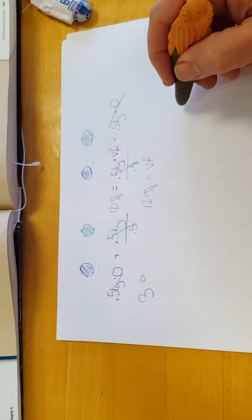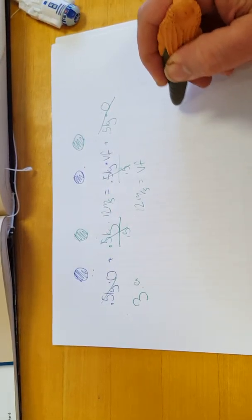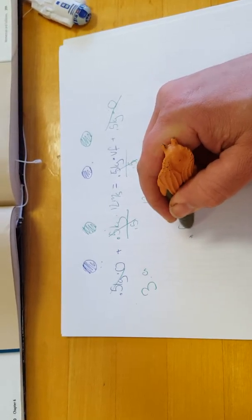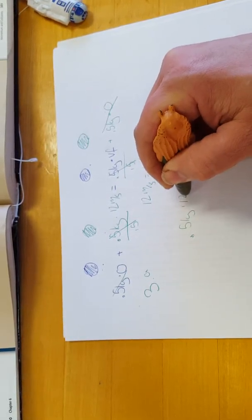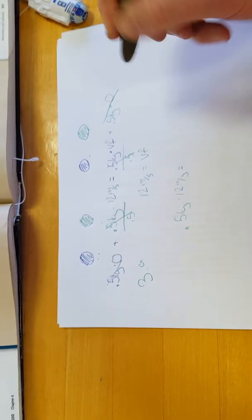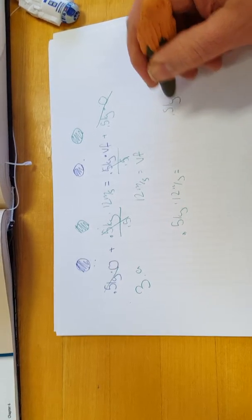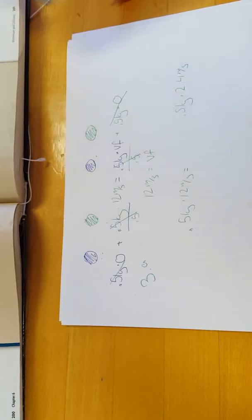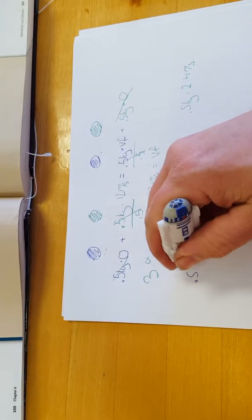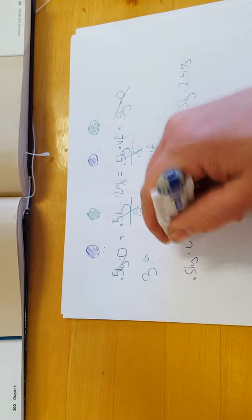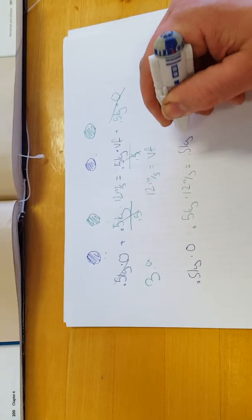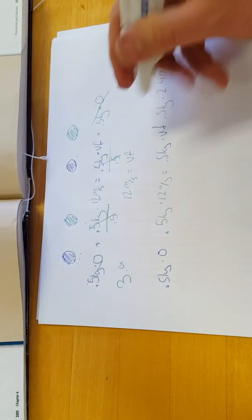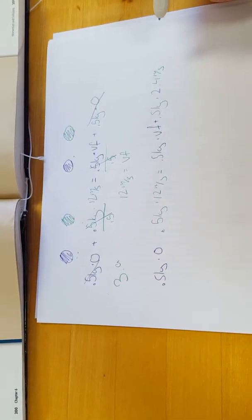The green ball instead will continue moving at 2.4 meters per second. So the initial part of this problem is exactly the same, 0.5 kilograms times 12 meters per second equals 0.5 kilograms times 2.4 meters per second on the final end, and then you add in the blue 0.5 kilograms times zero and 0.5 kilograms times V final, and there's a plus here.